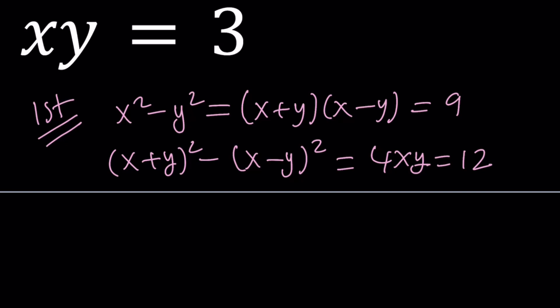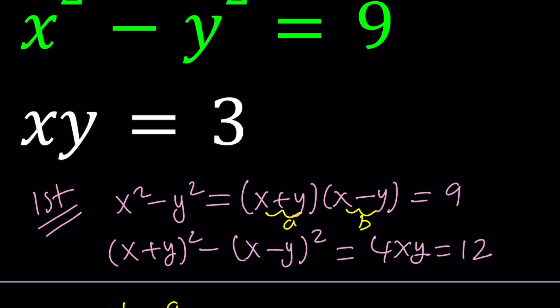And this gives me another system. So, I wanted to call this A and I wanted to call this B. You could also call it S and D for sum and difference. So, this gives me AB equals 9 and A squared minus B squared equals 12. But guess what? I got a very similar system where I have the difference of two squares and the product. So, that did not really seem to help.